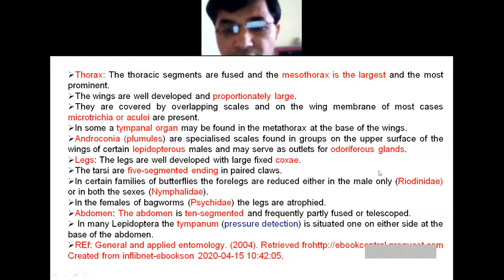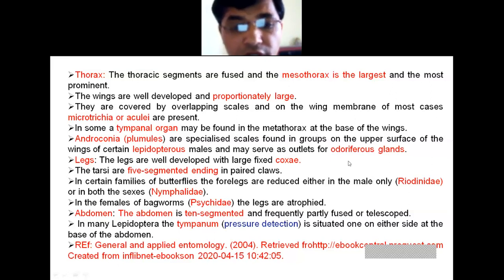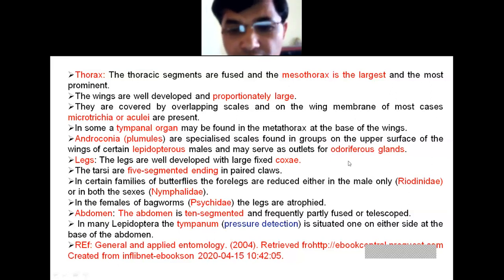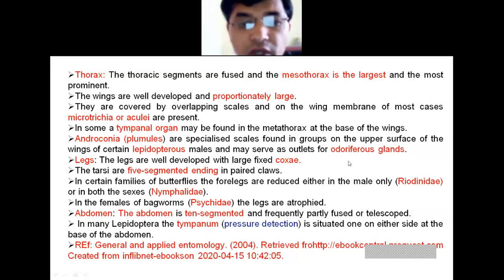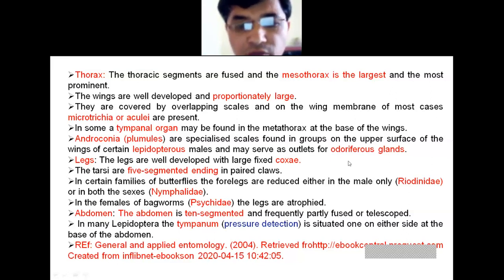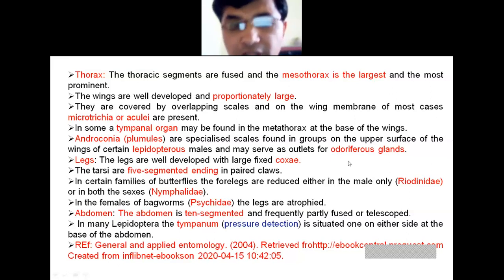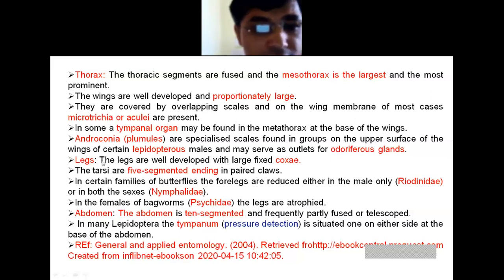The androconia are plumules — specialized scales found in groups on the upper surface of the wings of certain lepidopterous males. They serve as an outlet for the androconial pheromone glands. This gland secretes pheromones, which are semiochemicals — primary messengers that provide information from the source to the target.